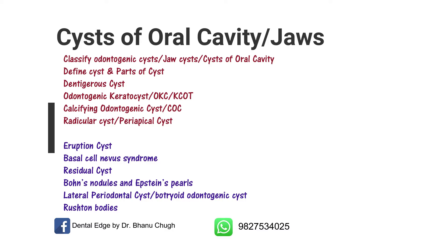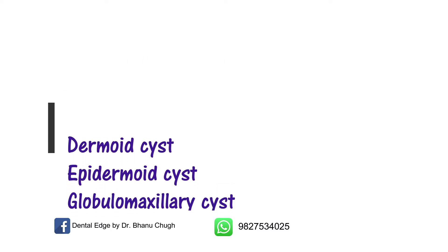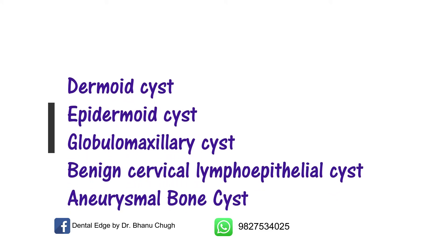There are some questions that are not asked very frequently — they can be a short note but are not asked in detail, or they can be viva or MCQs, so you should know a little bit about these topics. These are eruption cyst, basal cell nevus syndrome, residual cyst, Bohn's nodule and Epstein's pearl — there can be an MCQ on this — then lateral periodontal cyst or botryoid odontogenic cyst, and Rushton bodies.